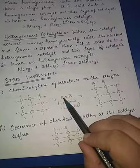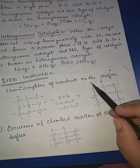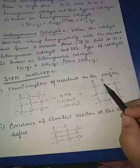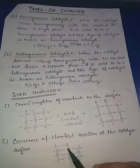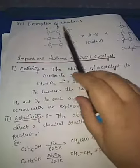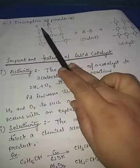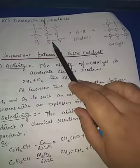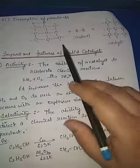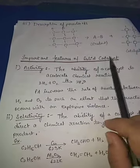Suppose this is a catalyst and two reactants A and B — they will get adsorbed on the surface of the catalyst. Then the second step is the occurrence of a chemical reaction at the catalyst surface, where A and B combine with each other. In the third step, desorption of the products occurs — they combine to form the product and this product desorbs itself from the surface of the catalyst. These are the three steps involved in heterogeneous catalysis.